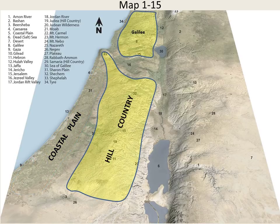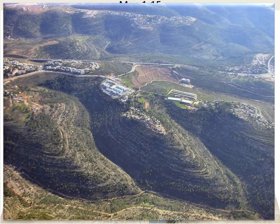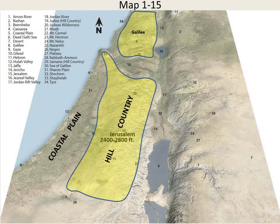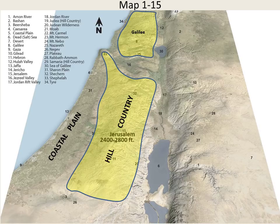Next is the hill country. Jerusalem sits on the watershed of the hill country at some 2,400 to 2,800 feet above sea level. The hill country is rough terrain of deep valleys and high ridges. It extends north and includes Mount Carmel, which juts out into the Mediterranean Sea, and Galilee. Note here a break in the hill country which separates the hill country of Judah and Ephraim from Galilee in the north — a wide plain, the triangular or arrowhead-shaped Jezreel Valley.